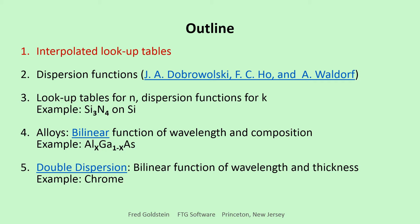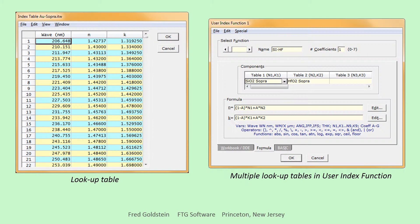We first consider familiar and not so familiar lookup tables. The image at the left shows a typical NNK dispersion table whose values are linearly interpolated at calculation wavelengths.